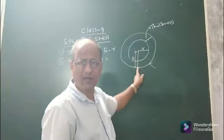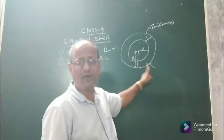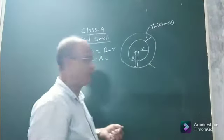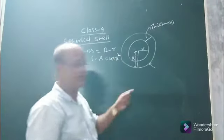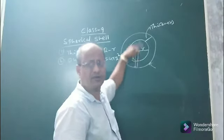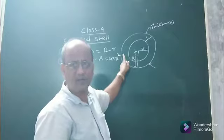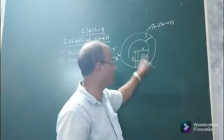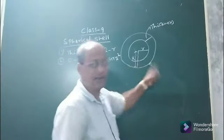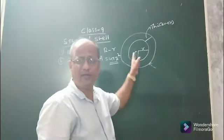The spherical shell consists of two concentric solid spheres having two radii — capital R and small r, that is outer radius and inner radius. The outer surface area will be 4π capital R², and the inner surface area will be 4π small r², because each one is a solid sphere. The thickness formula is R minus r.